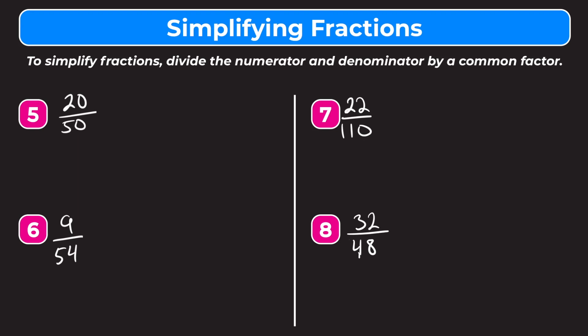Let's see number 5: we have 20 fiftieths. Hopefully you notice that both 20 and 50 end in a 0, which means they're both divisible by 10, because any number ending in 0 is divisible by 5, 10, and 2. So we divide both by 10: 20 divided by 10 is 2, and 50 divided by 10 is 5. Looking at 2 and 5, they have no common factors other than 1, so 2 fifths is the simplest form of 20 fiftieths.